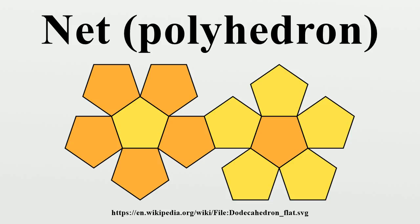In 1975, G. C. Shephard asked whether every convex polyhedron has at least one net. This question, which is also known as Dürer's conjecture or Dürer's unfolding problem, remains unanswered.